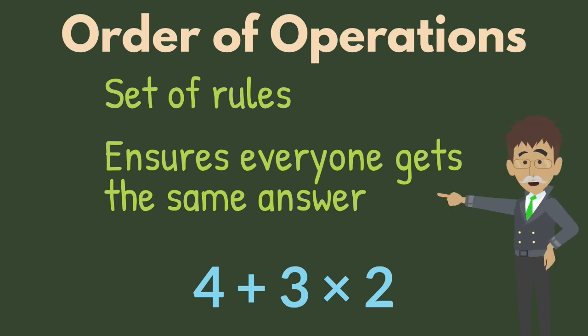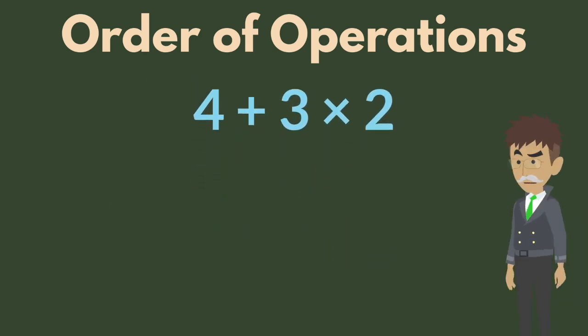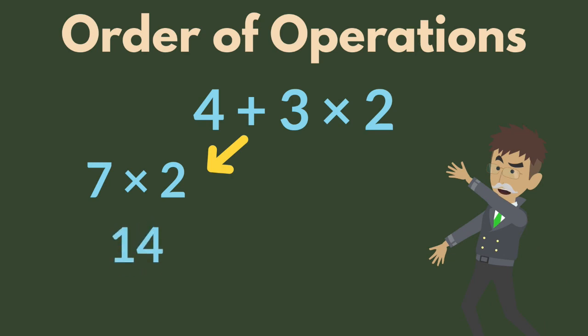Let's take a quick trip back in time. The order of operations is like the superhero of math. Over 100 years ago, it was invented to ensure everyone gets the same answer when they do math. Imagine how confusing it would be if we all got different answers.